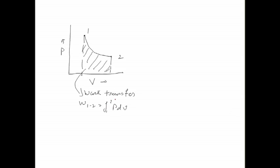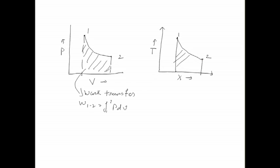Similarly, if we want to draw the TX diagram for heat transfer, we take two processes — process 1 (initial) and process 2 (final). The area under the curve on the TX diagram represents heat transfer, that is q12 equal to integration from 1 to 2 of t dx.